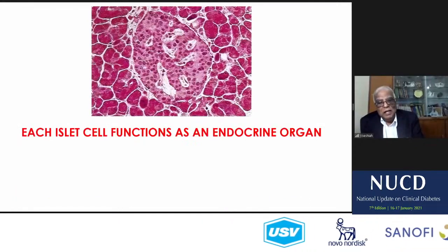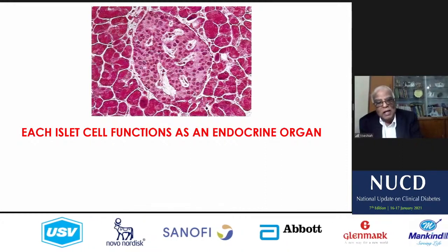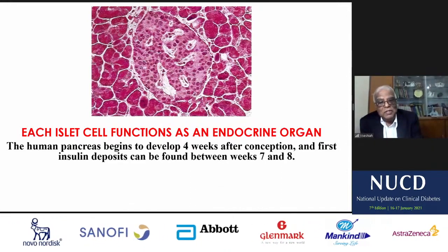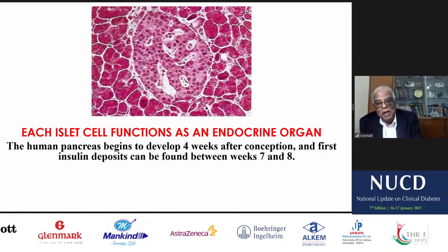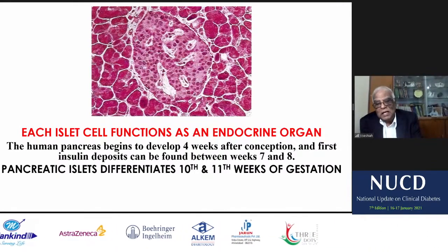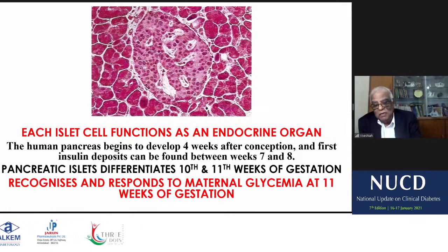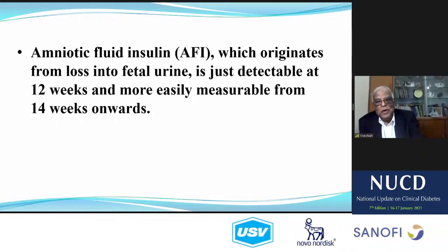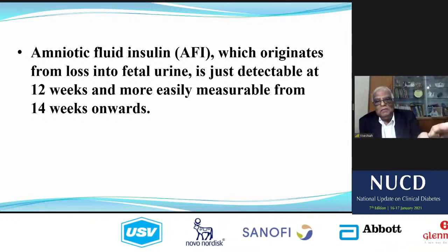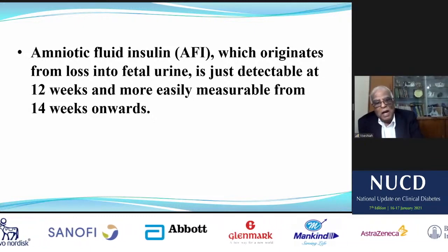Another important physiology: each islet cell functions as an endocrine organ; the placenta is an endocrine organ, and the islets are also another endocrine organ. The human pancreas begins to develop four weeks after conception. The first insulin deposit can be found between weeks 7 and 8 — so early. Pancreatic islets differentiate throughout gestation and then recognize and respond to maternal glycemia. The antenatal amniotic fluid insulin, which originates from loss into fetal urine, is detectable at the 12th week and more easily measurable from the 14th week onwards.